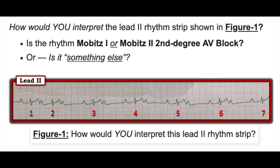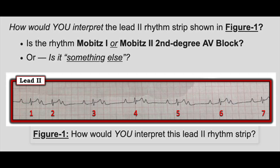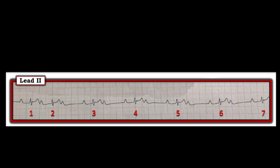Here is the rhythm. How would you interpret this rhythm? The choices are: sinus rhythm with blocked PACs, AV dissociation, complete AV block, second degree AV block Mobitz type 1, or second degree block Mobitz type 2. How many think it's complete AV block?